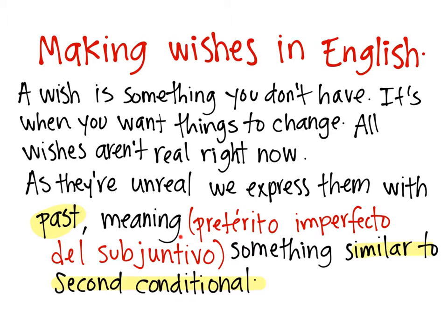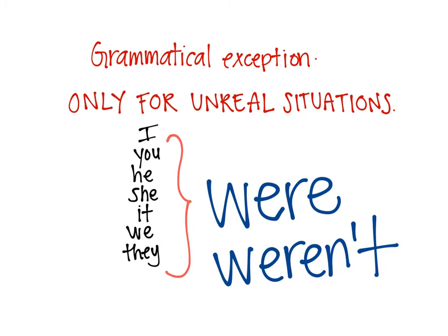Let's read this information in parentheses. Remember that the past in second conditional was not simple past — it's actually el pretérito imperfecto del subjuntivo: fuese, tuviese, hiciese, trajese, trajera, etc. That is for making wishes in simple present but in English. Again, as we're talking about unreal situations, remember the grammatical exception: only for unreal situations, all subjects are going to take 'were' or 'weren't' when it comes to the verb 'to be.' We're not going to use 'was' or 'wasn't' — only 'were' and 'weren't.' So that means: I were, you were, she were, he were, it were, we were, and they were.